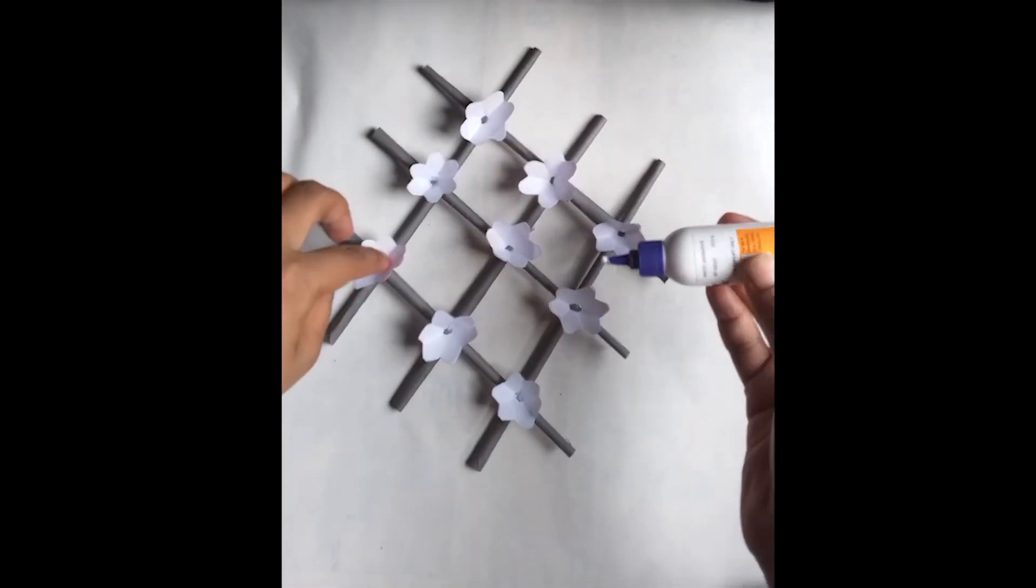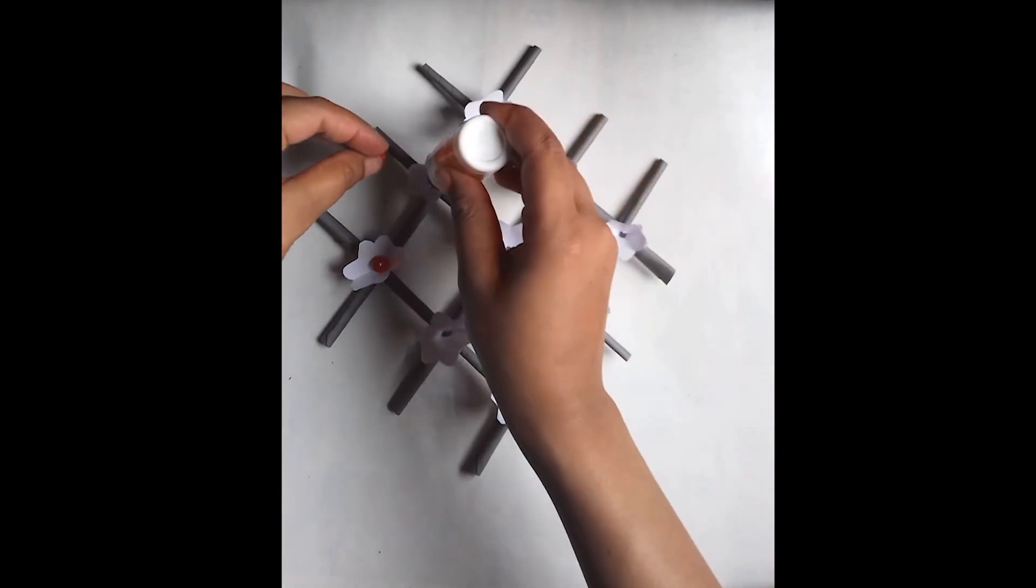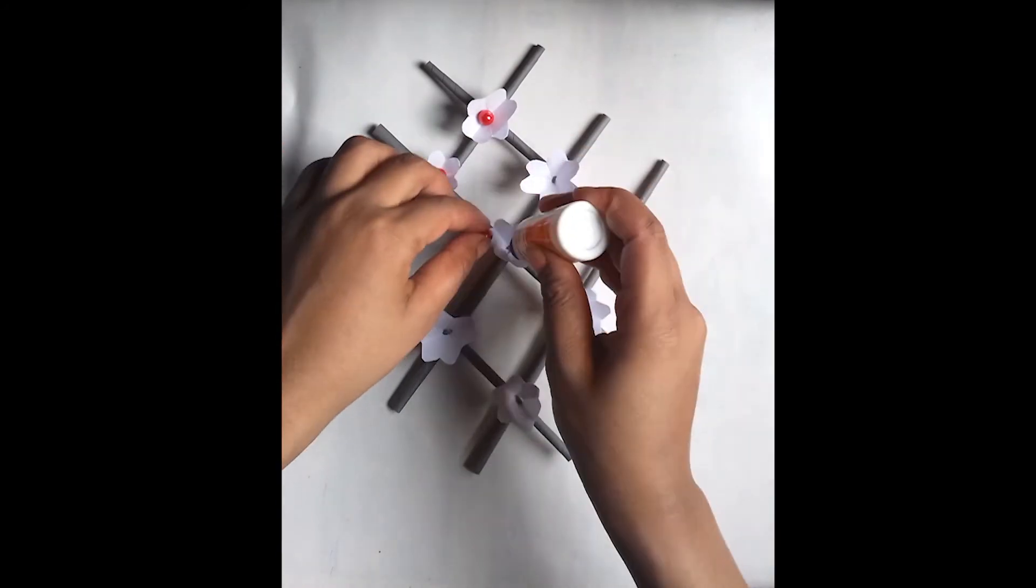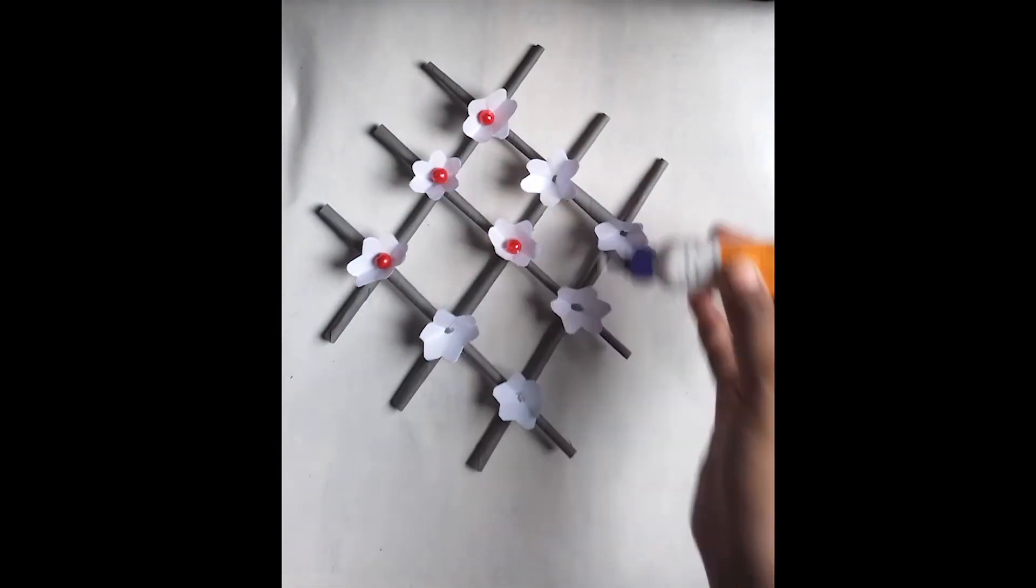Add glue on the flower and put one ball on each flower. Keep attaching the red balls to every flower.